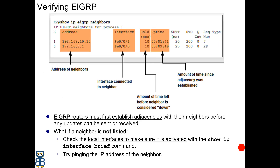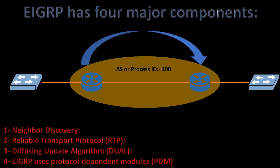EIGRP advertises routes to directly connected neighbors like a distance vector protocol, and uses a series of tables like link state protocols. EIGRP has four major components: neighbor discovery, Reliable Transport Protocol or RTP, Diffusing Update Algorithm or DUAL, and Protocol Dependent Modules or PDM.